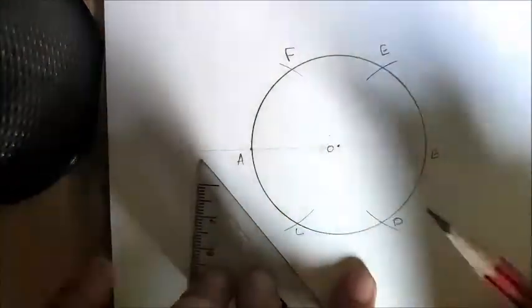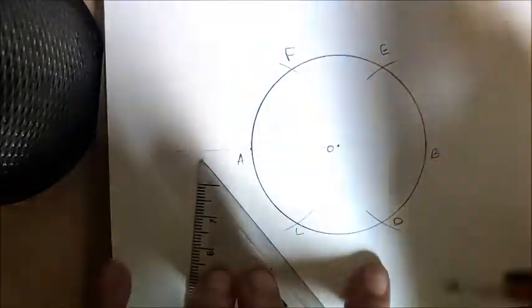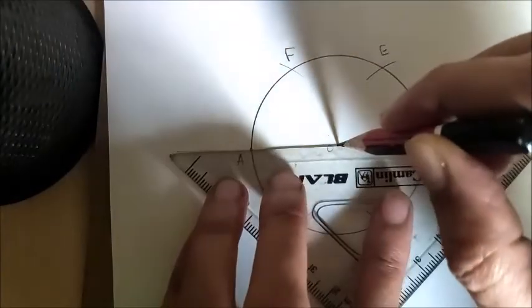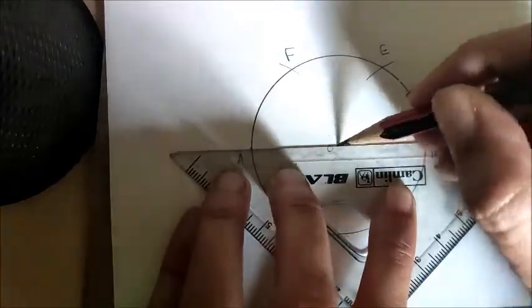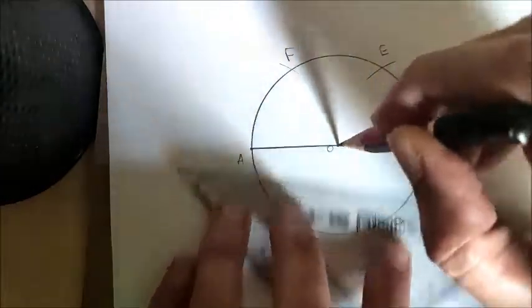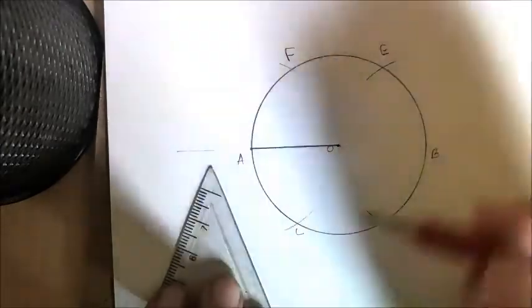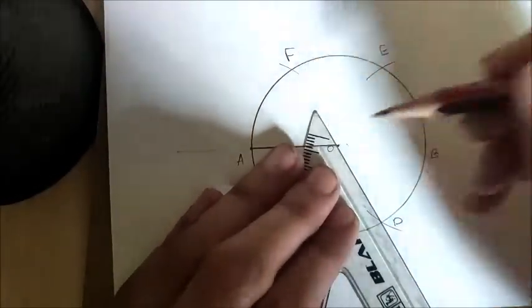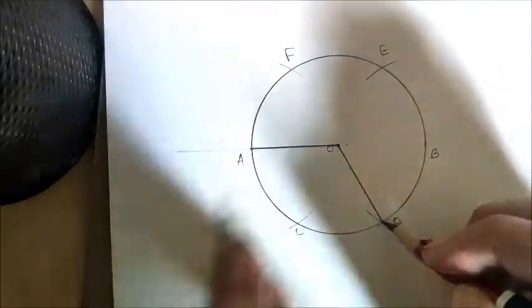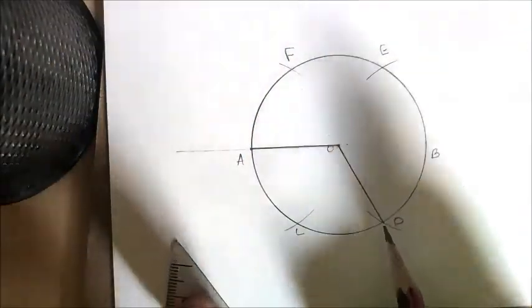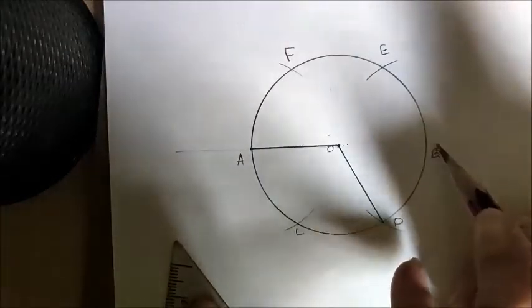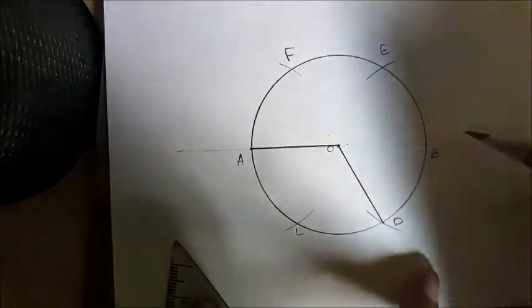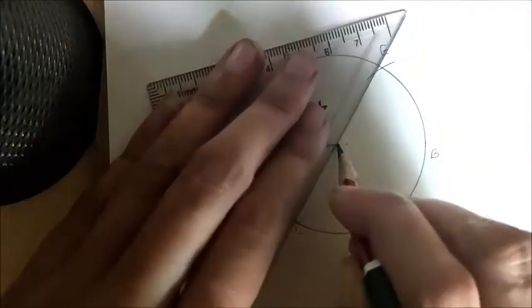We just have to join alternate points. For example, if I am joining O-E, then I will skip the point C and I will join D with O. So I'm skipping the point C and I'm joining D. Then I'm skipping the point B and I'm joining E.